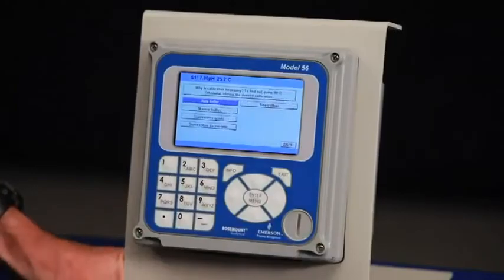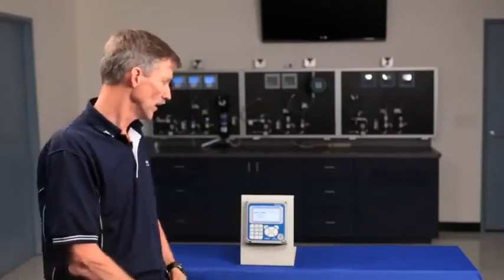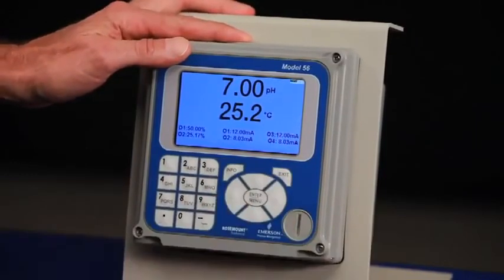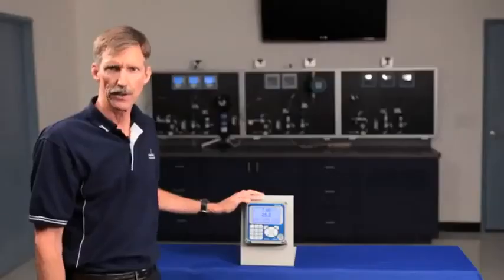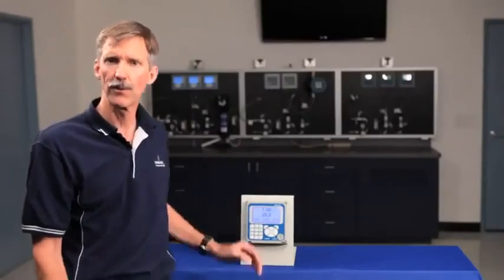As you can see, the streamlined calibration routines of the Model 56 helps technicians to perform calibrations. The highly readable screen, the variety of different calibration methods, and the troubleshooting screens really help I&E personnel and technicians to perform calibrations without a hitch. Thank you for your time.